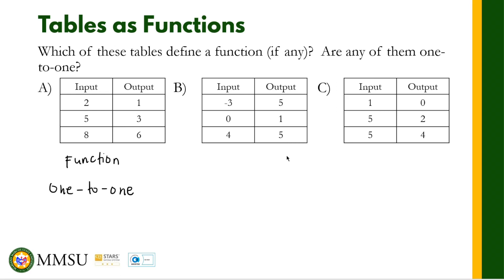How about letter B? The input is negative 3, 5, 0, 1, 4, 5. As you can see, the output, 5 appeared twice. So this one is many-to-one. This is a many-to-one relation. And as discussed in the previous video, many-to-one relation is still a function. This is still a function, but it's not one-to-one. It's a many-to-one.